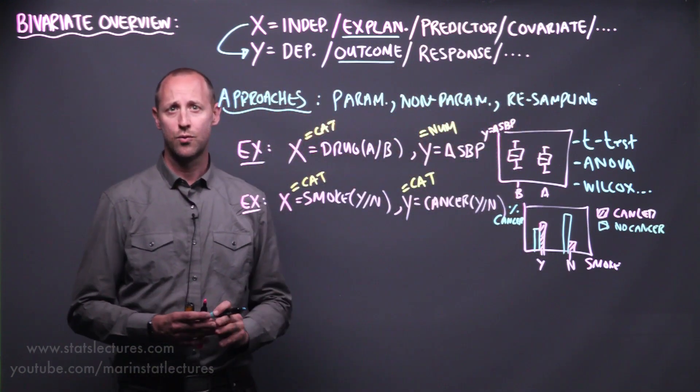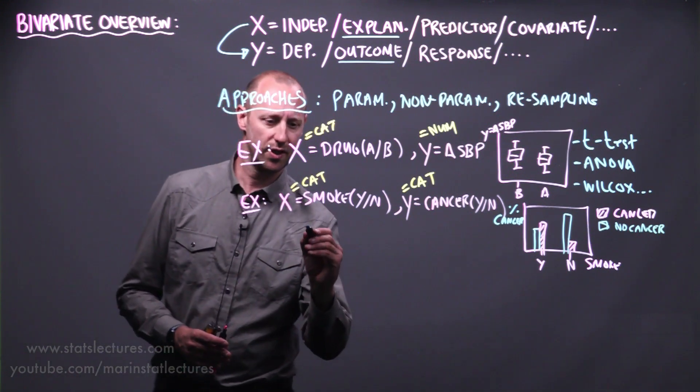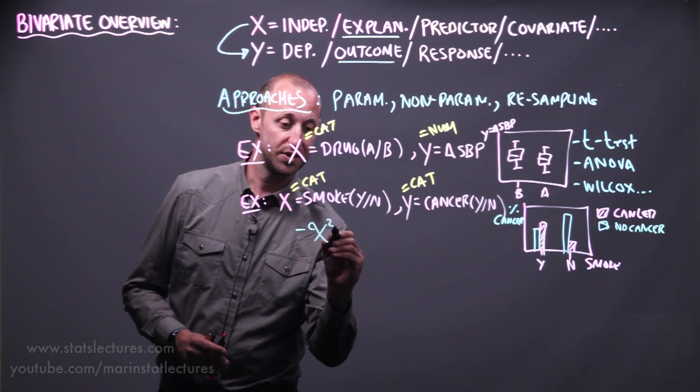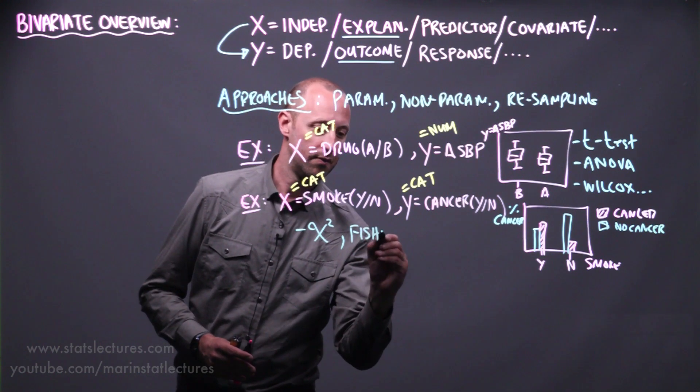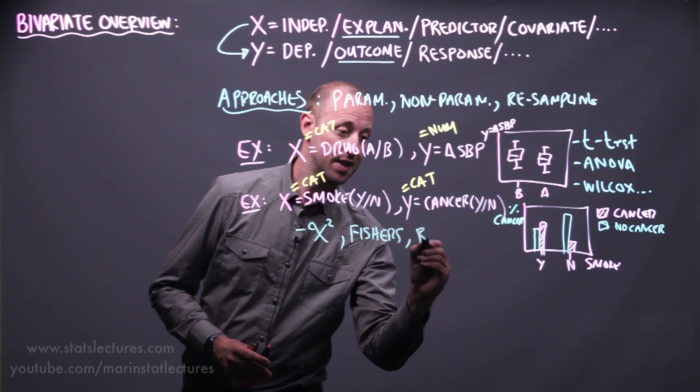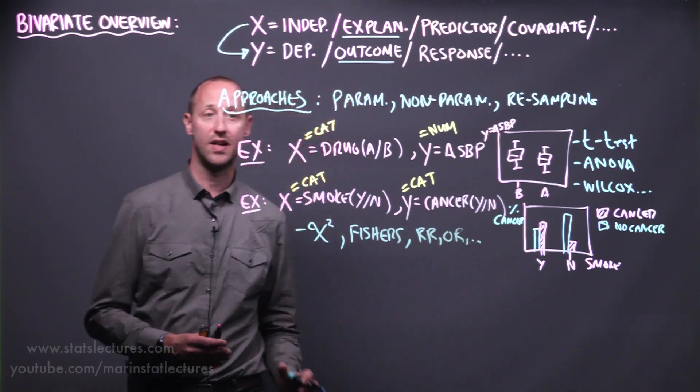We'll work our way through talking about different methods of analysis for this type of data. Things we're going to look at are things like Pearson's chi-squared test, Fisher's exact test, things like rate ratios or odds ratios and other methods of analysis there.